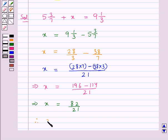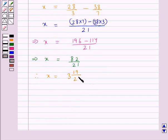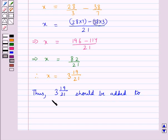3 19 upon 21. Therefore, we get x is equal to 3 19 upon 21. Thus, we can say that the number 3 19 upon 21 should be added to 5 3 upon 7 to get 9 1 upon 3.